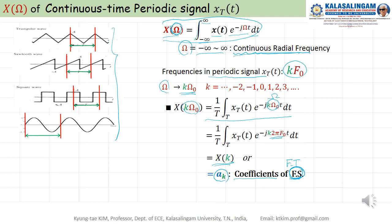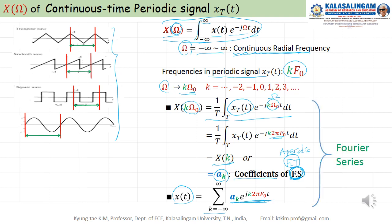The Fourier transform is for aperiodic signals. For periodic signals, we use the Fourier series. x(t) can also be represented by the inverse Fourier transform form, which we call the Fourier series — because x(t) here is a periodic signal.